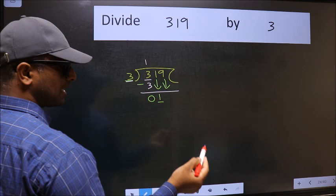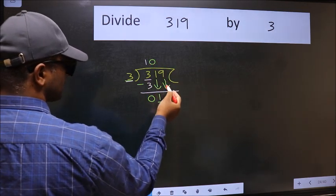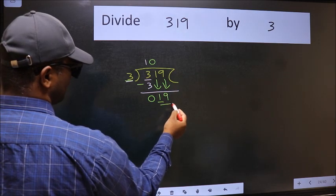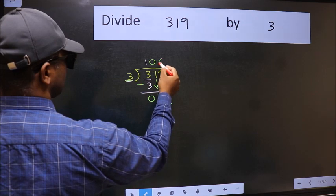And the rule to bring down second number is we should put 0 here. Then only we can bring this number down. Now 19. A number close to 19 in 3 table is 3 times 6 is 18.